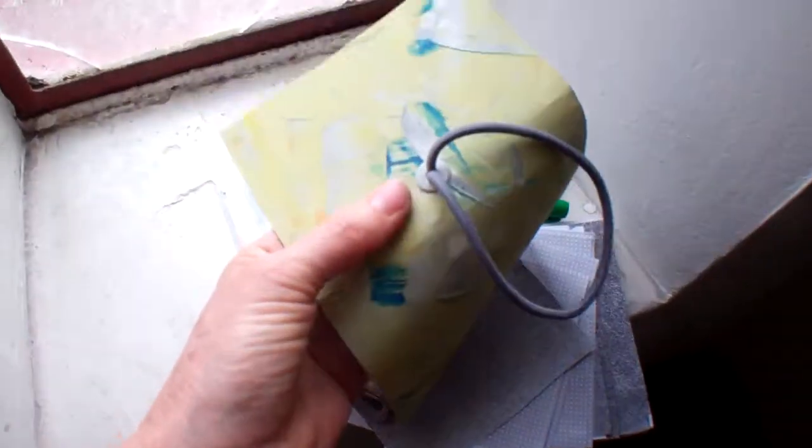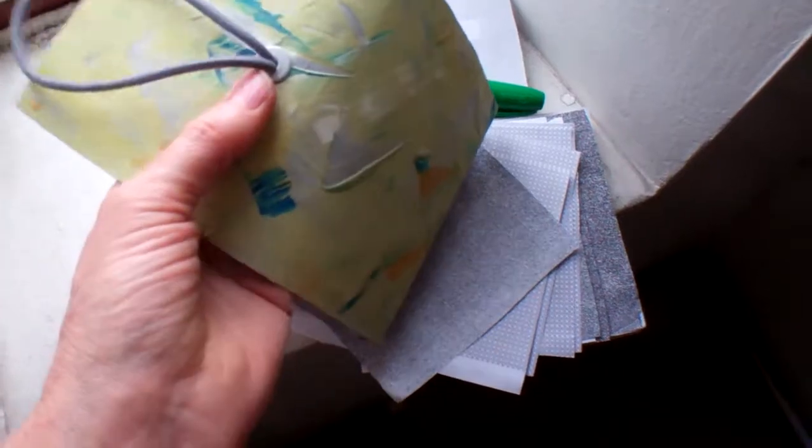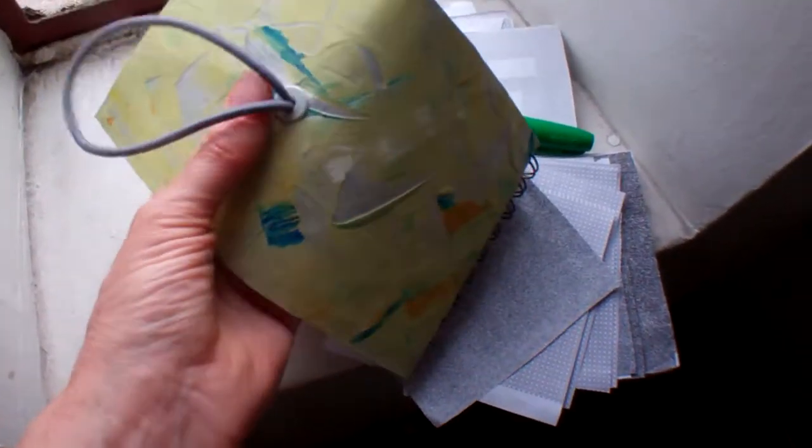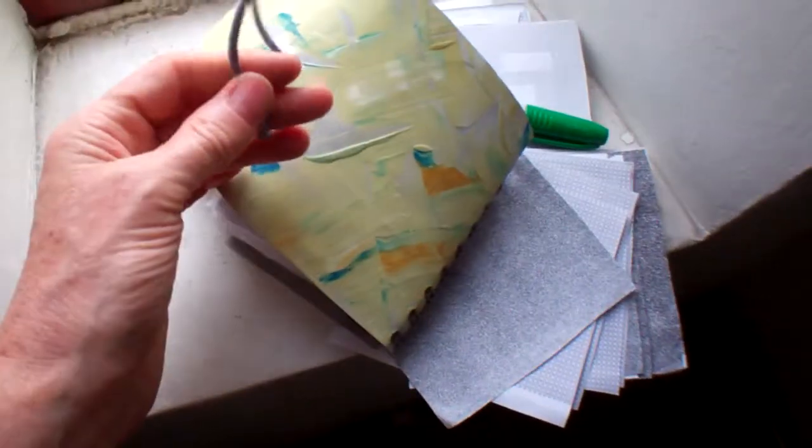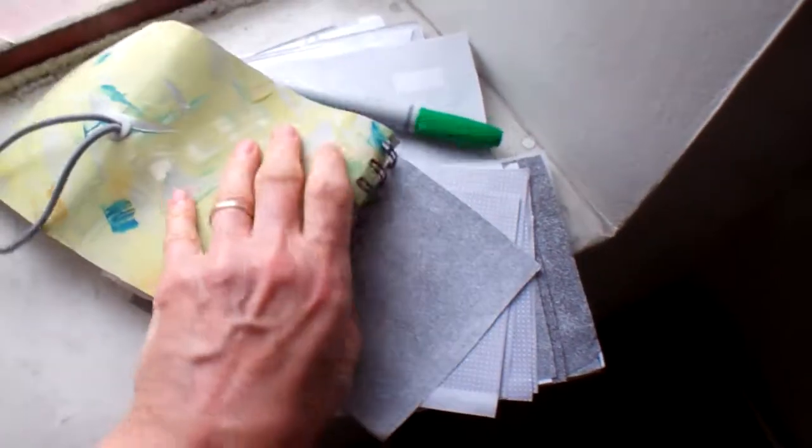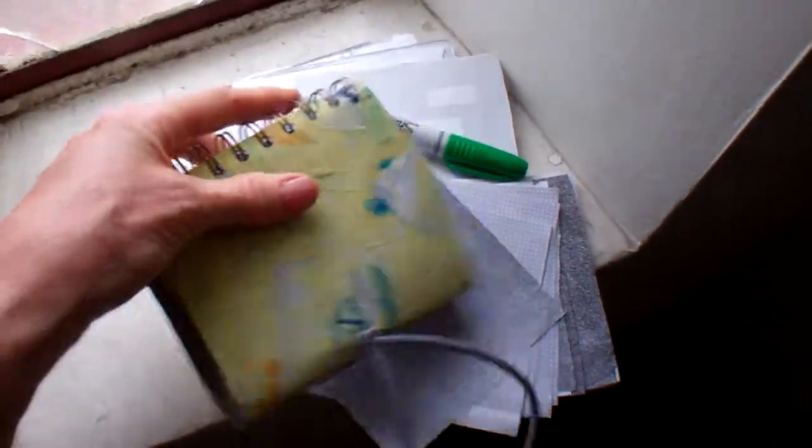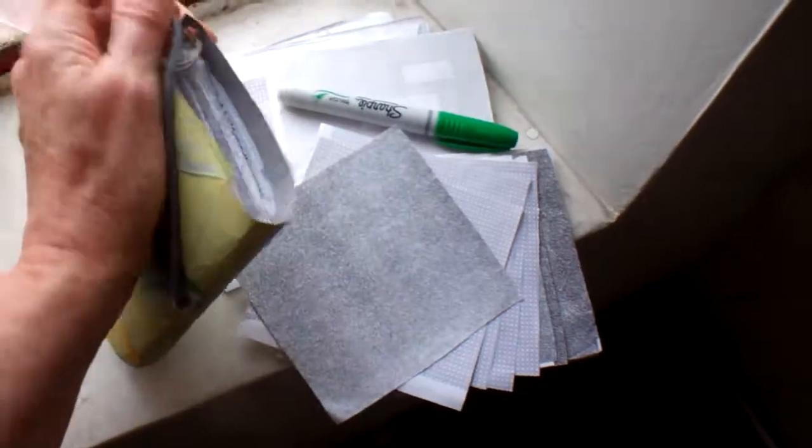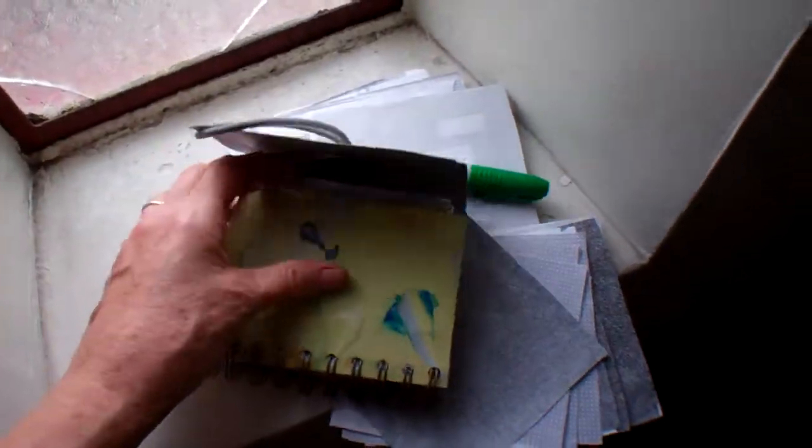This is the Crop-A-Dile. I have one that has the long reach, the big bite they call it. I have just a hairband, and this is the thing that holds the whole package together. I use the Cinch binding systems by We Are Memory Keepers. Again, I seem to like them a lot.